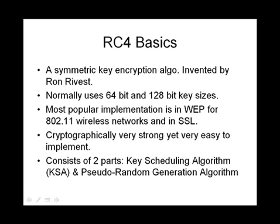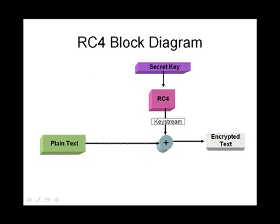RC4's encryption process consists of two parts: one is the key scheduling algorithm, called the KSA, and the other is the PRGA, or pseudo-random generation algorithm. As we can see in the block diagram, the secret key is the passphrase or password used to encrypt. The RC4 block is the encryption engine consisting of the KSA and PRGA, and it outputs the key stream. The plain text and key stream are XORed byte by byte to produce the encrypted text, which is sent to the intended receiver who decrypts it to get back the original plain text.